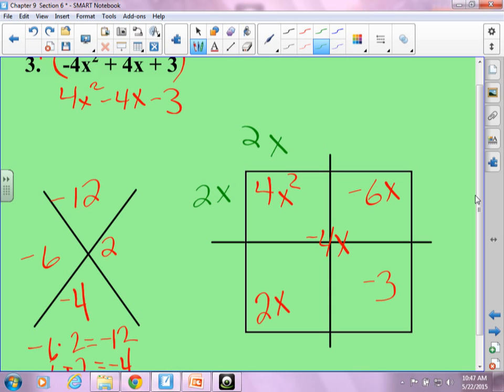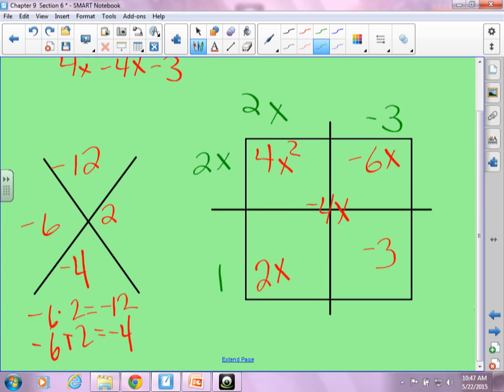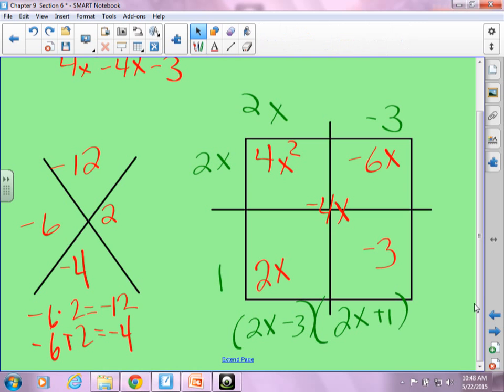2x times what gives me negative 6x? Negative 3. 2x times what gives me 2x? 1. So my factors then are 2x minus 3 and 2x plus 1.